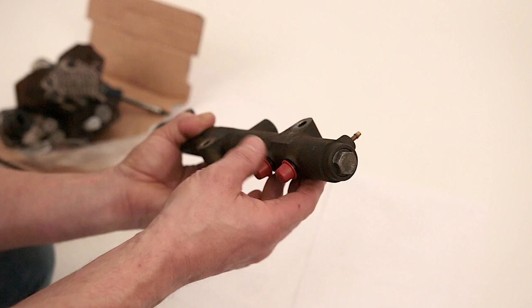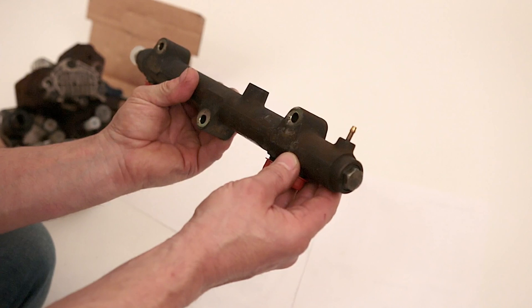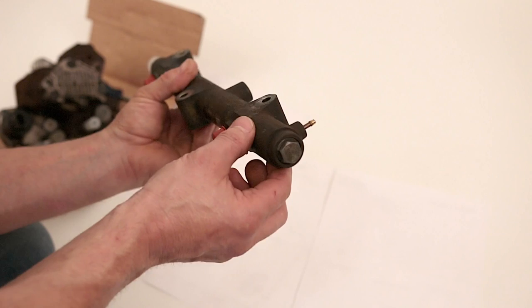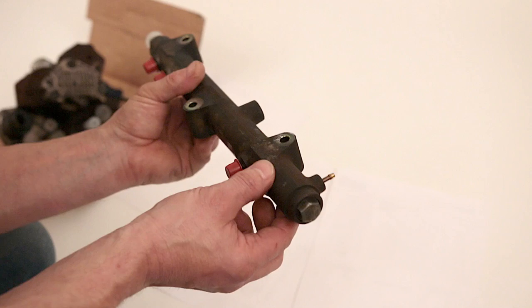Now these are the 2.5 liter common rail diesels in these vans, which are the Chrysler engine. And the same engine, but a 2.8 version, they put in the Chrysler Voyagers. Quite a common engine, actually, in Chryslers.